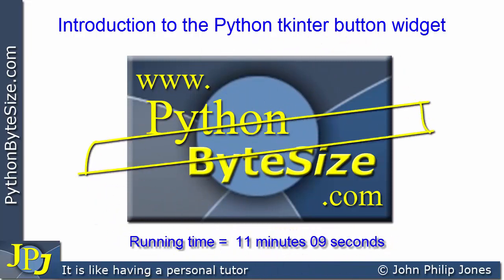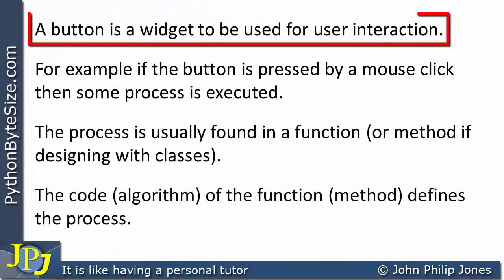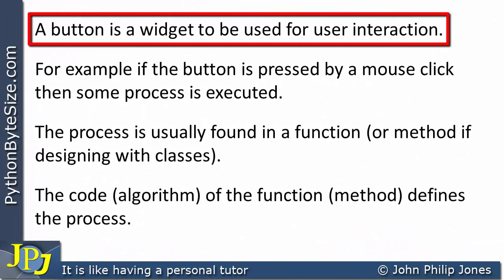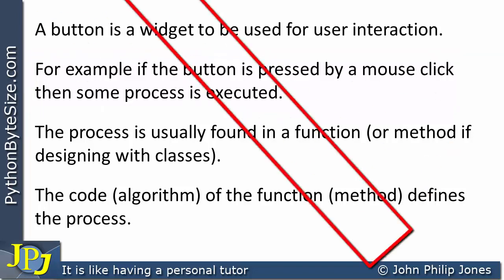In this video we're going to look at how we can place a button widget onto a window and also how we can cause code to execute when we click the button. A button is a widget used for user interaction. If you've got a graphical user interface and you see a button, it's usually there to allow the user to click on it to fire some process. For example, if the button is pressed by a mouse click then some process is executed.